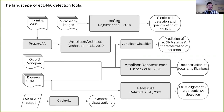Over the years we've built many tools around AmpliconArchitect as an ecosystem. These include tools to standardize data preparation, tools to standardize classification of ecDNA in the resulting graph decompositions, and another tool that takes microscopy images and counts the number of ecDNA per cell — a powerful orthogonal way to detect ecDNA that doesn't involve sequencing.